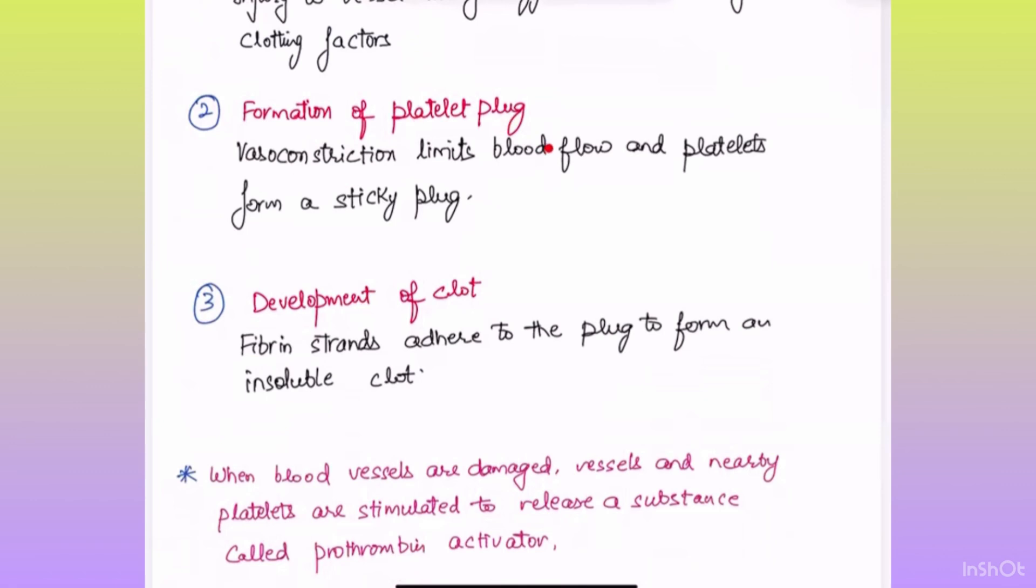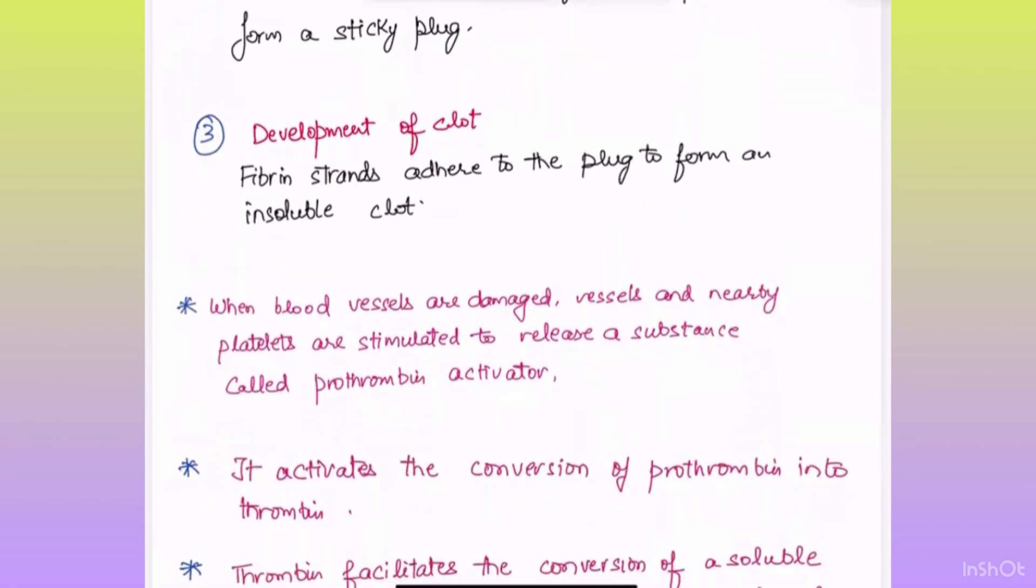Vasoconstriction limits blood flow and platelets form a sticky plug. Third step, development of clot. Fibrin strands adhere to the plug to form an insoluble clot.